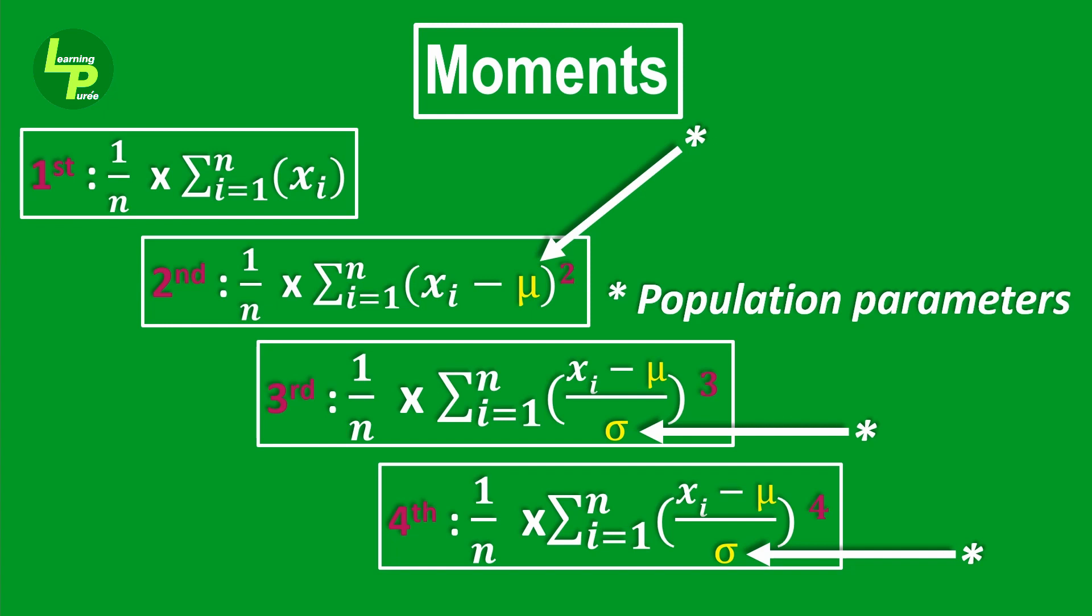We also know that in statistics, we are often restricted to using parameters for a sample rather than the population because most often we do not have access to the population parameters. So, instead of the population mean μ, we will use the sample mean x̄.